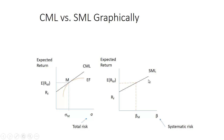The security market line is used to price individual risk and return for an individual security. The capital market line, on the other hand, makes the argument that everybody should buy the same portfolio — essentially, you ought to buy an index fund.